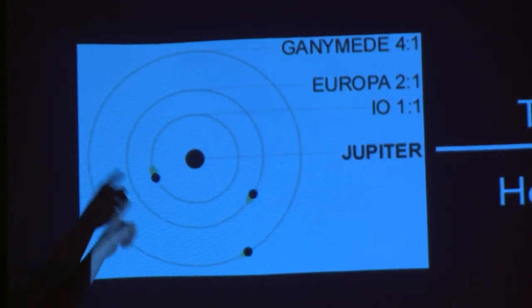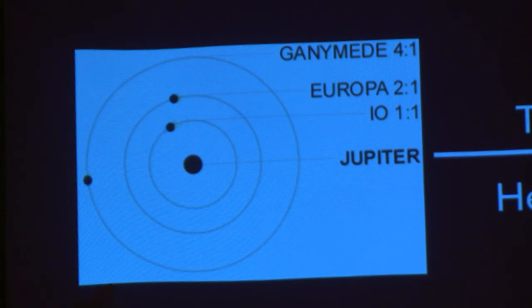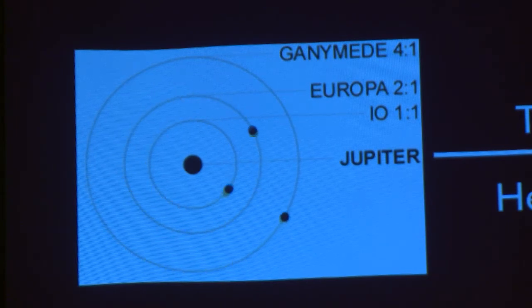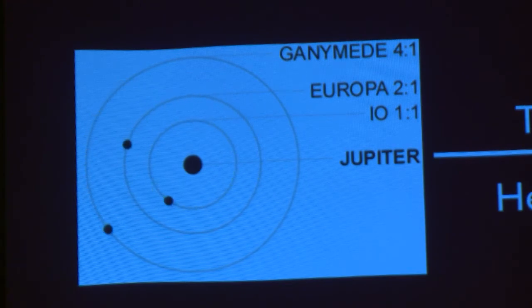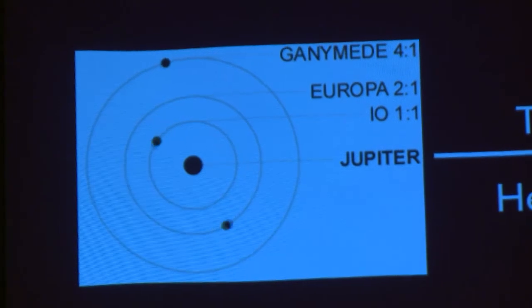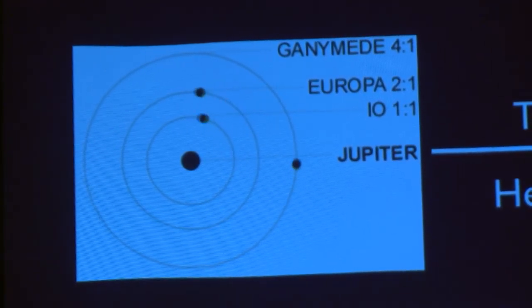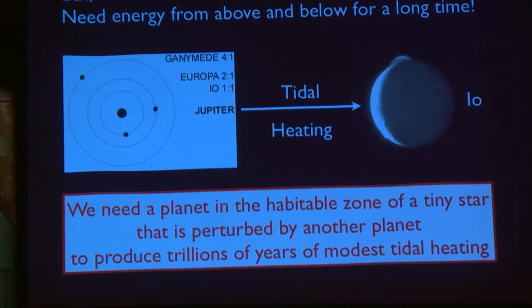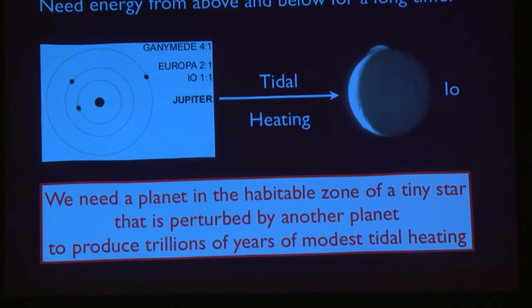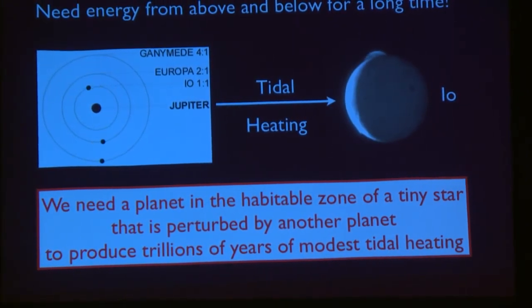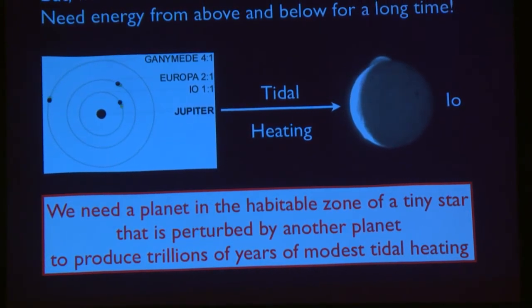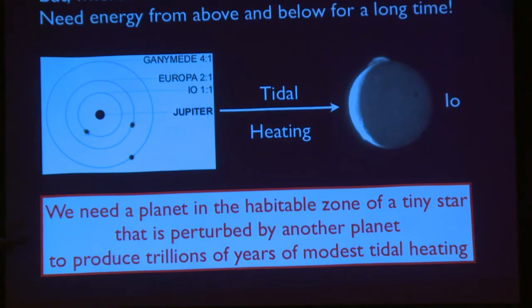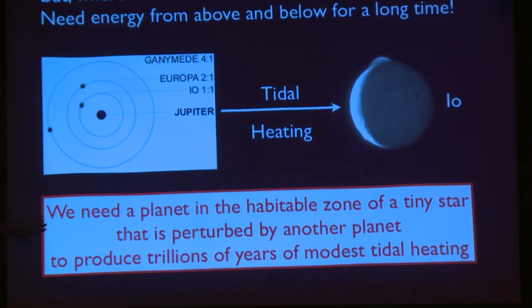So if we could find an exoplanet that was orbiting a very tiny star in its habitable zone with this long-lived tidal heating, maybe not at Io's level. Io actually resurfaces with lava about every 10,000 or 100,000 years, so I don't think that's a great place to live. But maybe if we could get a little bit less, we might be able to actually find a place that's worth moving to. Here's the bottom line. I think if we're going to think about how to move beyond the Earth, we need to find a planet in the habitable zone of a very tiny star that is being perturbed by another planet in its system such that it is getting a modest amount of tidal heating. This is the perfect planet we want to look for. For all of you who love Earth, I'm afraid I don't think that the Earth is the best planet in the galaxy to live on. We want to find this one.